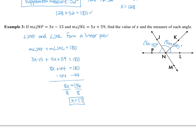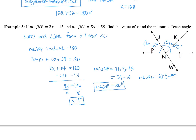We need to find the value of x — that's one answer — and the measure of each angle. For the measure of angle JNP, plug in: 3 times 17 is 51, minus 15 is 36 degrees. For the measure of angle JNL, plug into 5x plus 59: 5 times 17 is 85, plus 59 is 144 degrees.